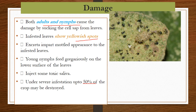The infested leaves show chlorotic patches on their upper surface, and they impart a mottled appearance due to continuous sucking of sap from the leaves. The young nymphs feed gregariously on the lower surface of the leaves. During feeding, they inject toxic saliva into the plant, due to which the leaves appear mottled. Under severe infestation, they cause up to 50% damage.